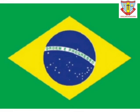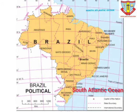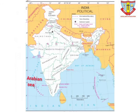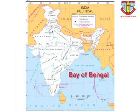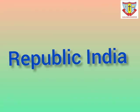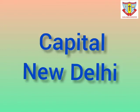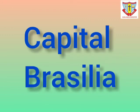These are the features of location, extent, and boundaries. Brazil is bounded by the North Atlantic Ocean and South Atlantic Ocean. Comparing to India, India is bounded by the Arabian Sea, Indian Ocean, and Bay of Bengal in the south, making it a peninsular country. Both India and Brazil are republic countries. The capital of India is New Delhi and the capital of Brazil is Brasilia.